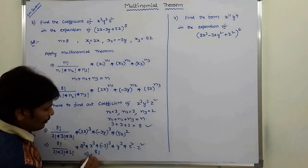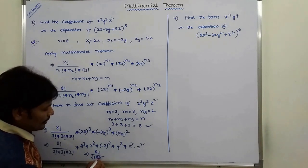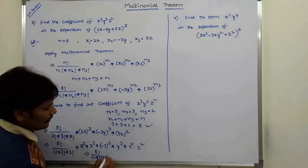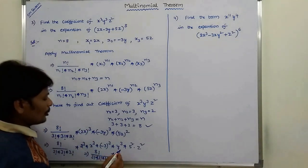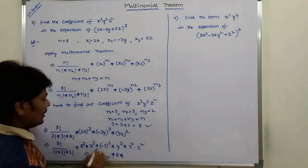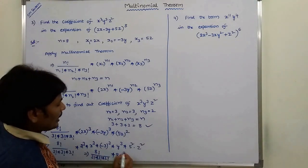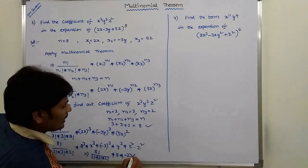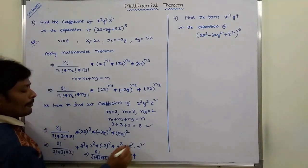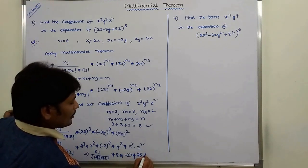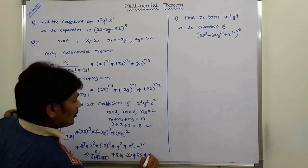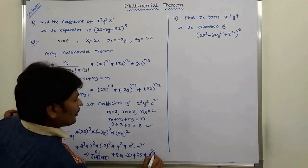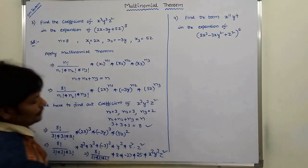Finally, we get 8 factorial by 3 factorial into 3 factorial into 2 factorial, into 2 cube (which is 8), into x cube, into minus 3 cube (which is minus 27), into 5 square, into x cube y cube z square.